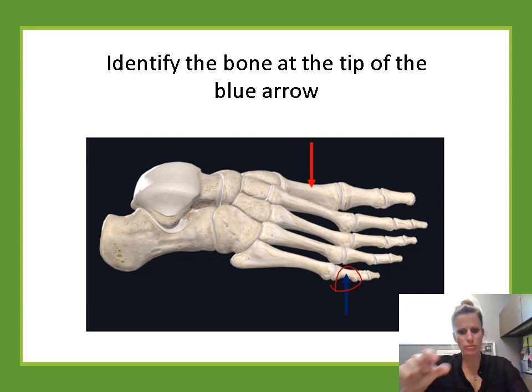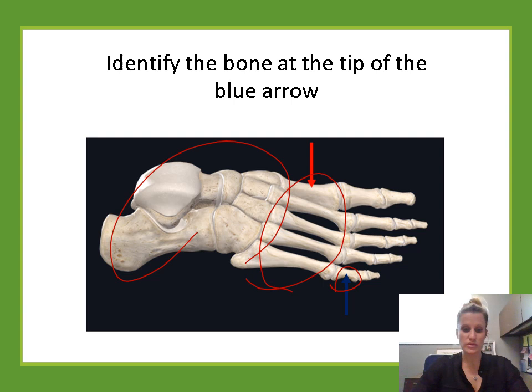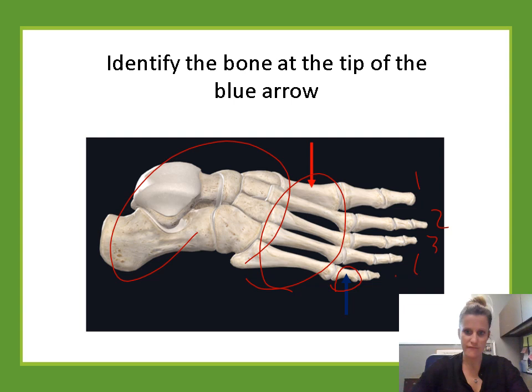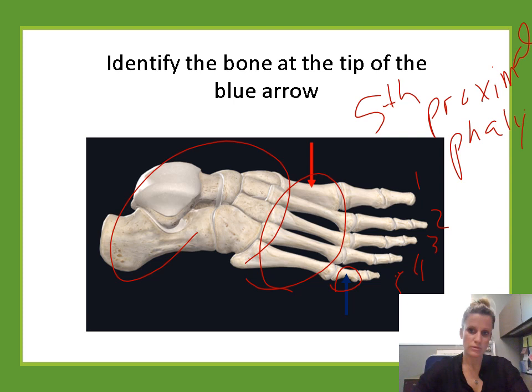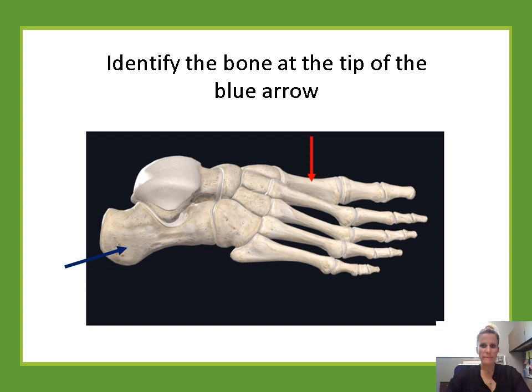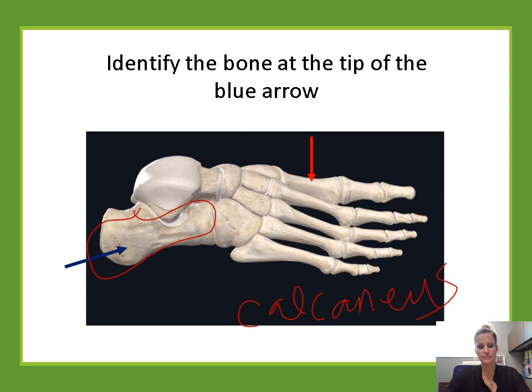Identify the bone at the tip of the blue arrow. We're looking at the pinky and the first little bone in the pinky toe. The organization is: tarsal bones, then metatarsals, then phalanges. This is the first of three phalanges in that pinky toe, so it's the proximal phalanx. The pinky is number five, so this is the fifth proximal phalanx — spelled P-H-A-L-A-N-X. Also, the heel bone is the calcaneus.